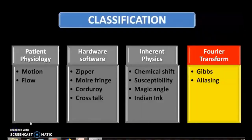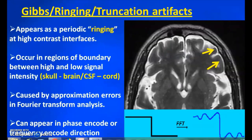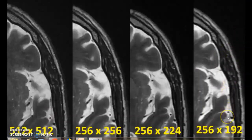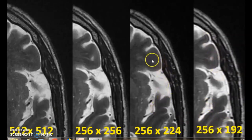The final classification is Fourier transformation-related artifacts — the Gibbs ringing artifact. It appears as periodic ringing at high-contrast interfaces occurring at boundaries between high and low signal intensities, such as skull-brain or CSF-cord interfaces, seen as multiple lines along the planes of the boundaries. By increasing the matrix, this kind of Gibbs artifact can be eliminated. You can see multiple white lines with a low matrix, which are gradually reduced by increasing the matrix, and with a high matrix it is completely eliminated.